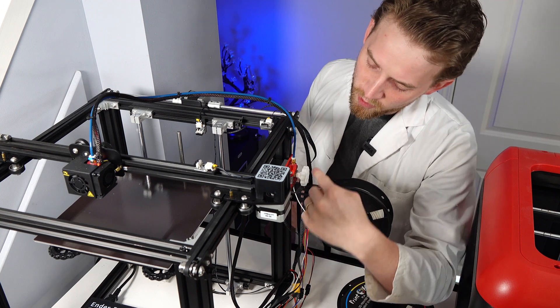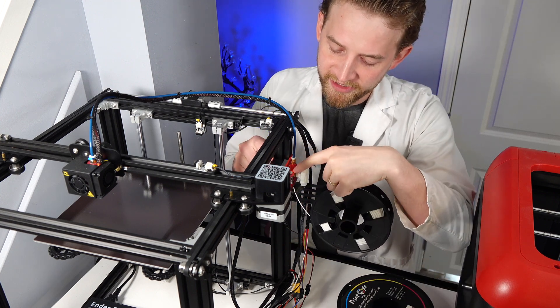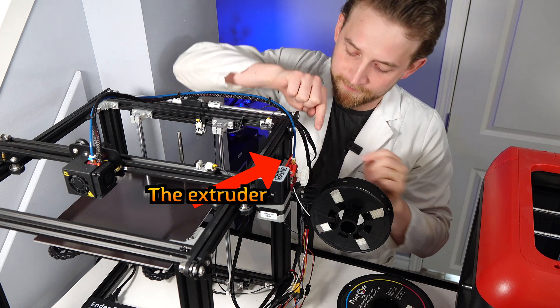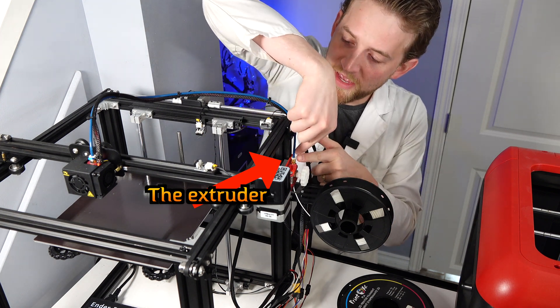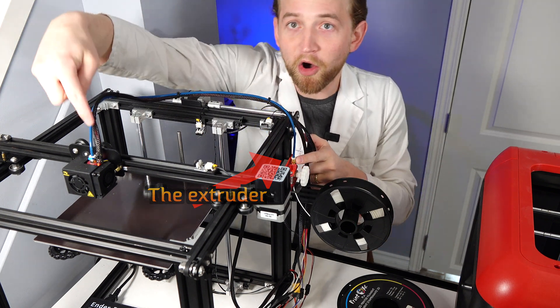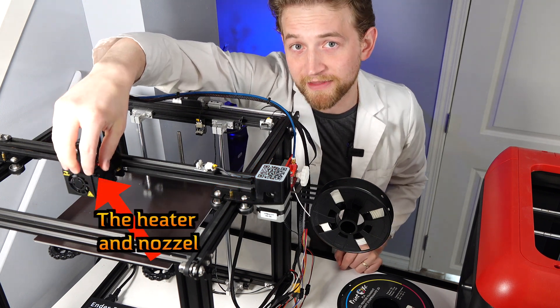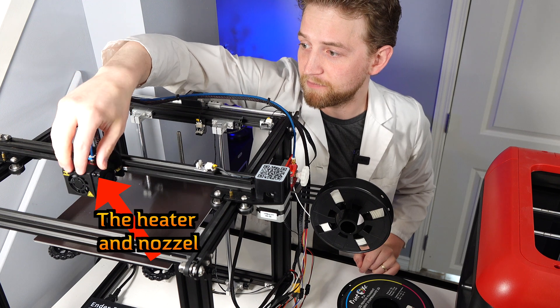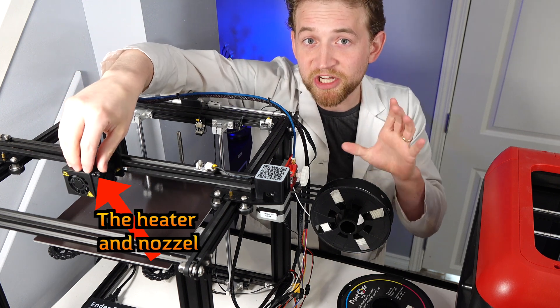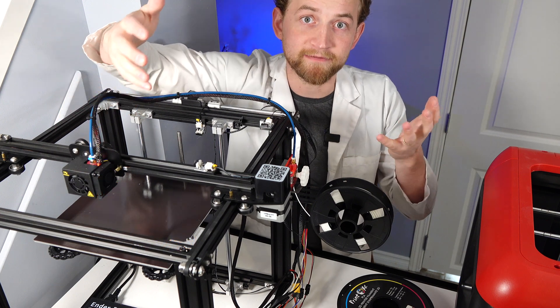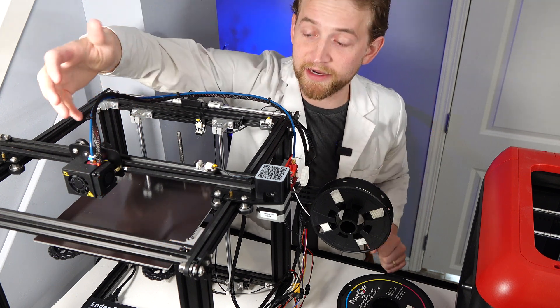The filament gets loaded into this unit right here, and this is the motor that feeds the filament to the heater. So the filament enters through here and goes through this tube all the way to this unit here, which is the heater. So this is the part that heats up the PLA filament, so it's warmed up to just above its melting point, and it can be in its liquid form and then fused with the other layers that it lays down.